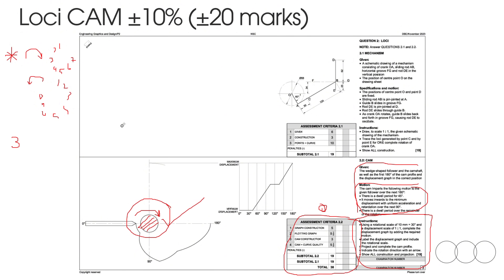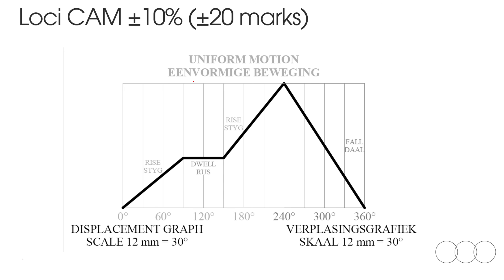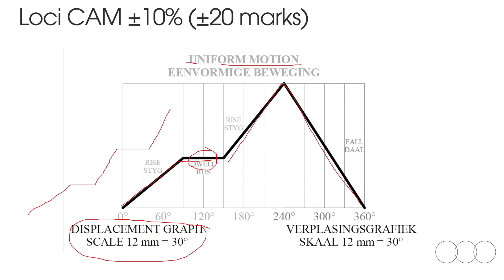You need to know the three motions. The first motion is uniform motion, which means straight lines. You construct straight lines according to the motion given in the question and apply them to the measurements provided. If it dwells, it stays flat; when it rises, you draw a line up; when it falls, you draw a line down. Always write the displacement graph title and the scale at the bottom of your graph to get the bonus marks.